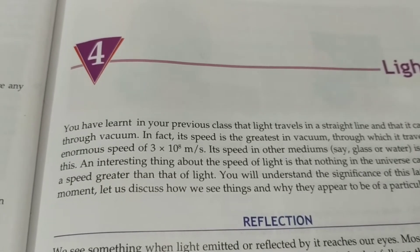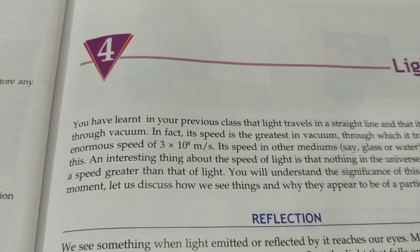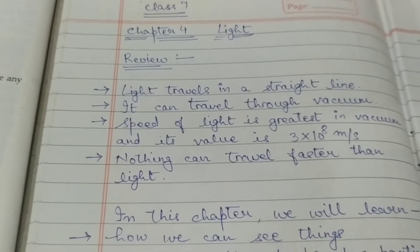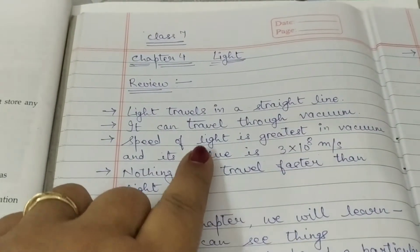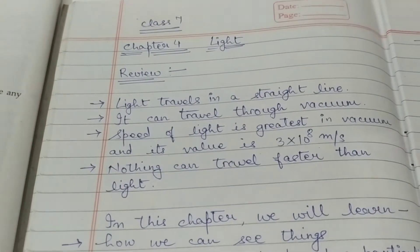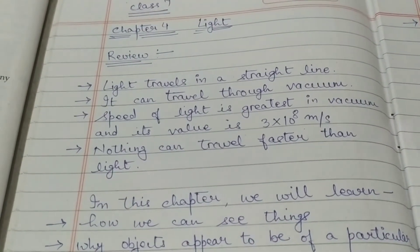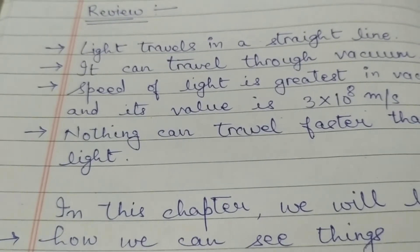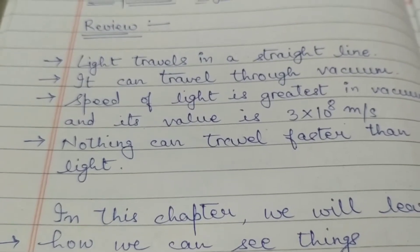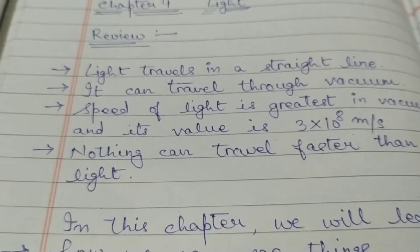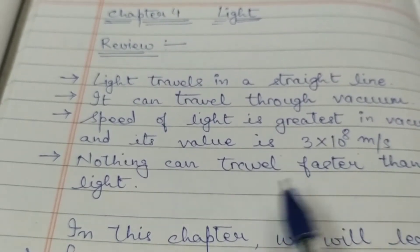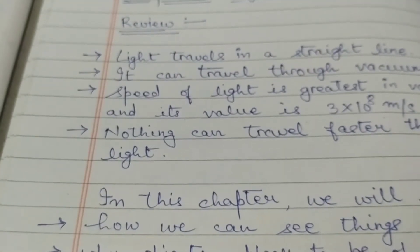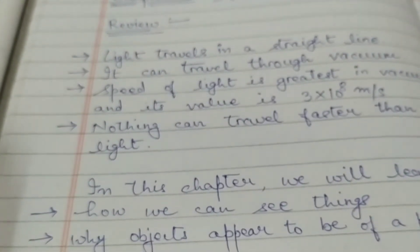You've already studied about light in your sixth class, so let us first revise the basic things. First and foremost, light travels in a straight line — this is called rectilinear propagation of light. Light can also travel through vacuum; it does not require any medium. The speed of light is maximum in vacuum, its value is 3 × 10⁸ metres per second, and nothing can travel faster than light.